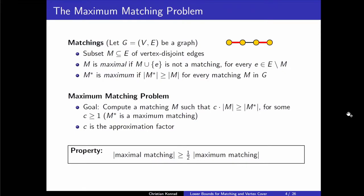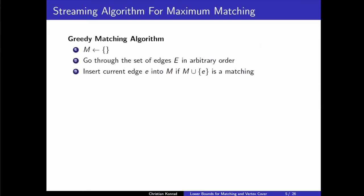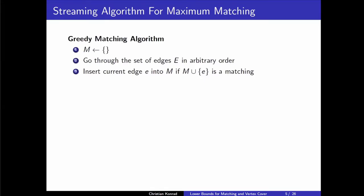In the streaming model, the most natural approach is the simple greedy matching algorithm. We start with an empty matching, go through the edges of the input graph in arbitrary order, and if the current edge E can be added — meaning M union {E} is still a matching — then we just do that. Basically, probe every edge and insert it into your matching if possible.